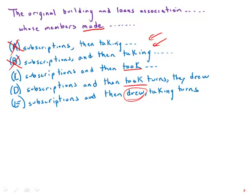And then the end of that sentence, taking turns on the funds for home mortgages, that just makes no sense whatsoever. So E is just a train wreck. So we're down to C and D.